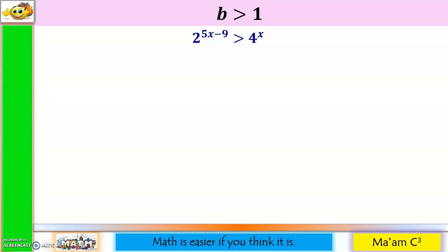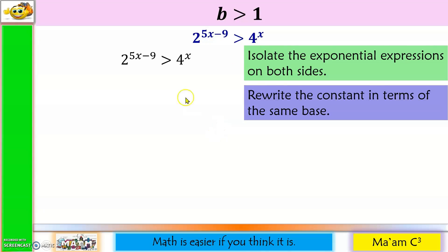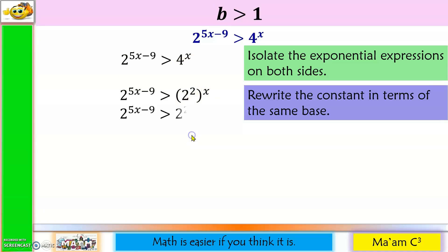Another example. Step 1: isolate the exponential expressions on both sides — they are already isolated, so let's just copy the inequality. Step 2: make our bases the same. This is quite easy — I'll just make 4 as 2 squared, and simplify by multiplying 2 times x.